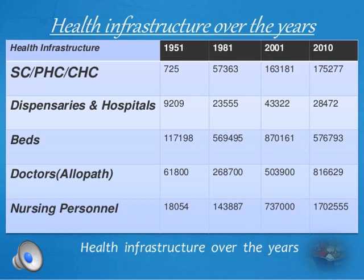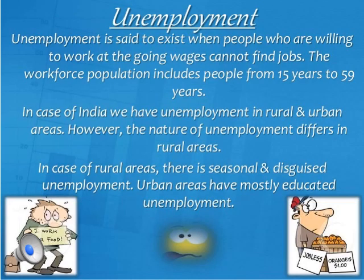Unemployment exists when people are willing to work but cannot find a job. The workforce population includes people from 15 to 59 years of age who are capable of employment. In India, unemployment exists in both rural and urban areas, but the nature differs. In rural areas there is seasonal and disguised unemployment, while in urban areas there is mostly educated unemployment.